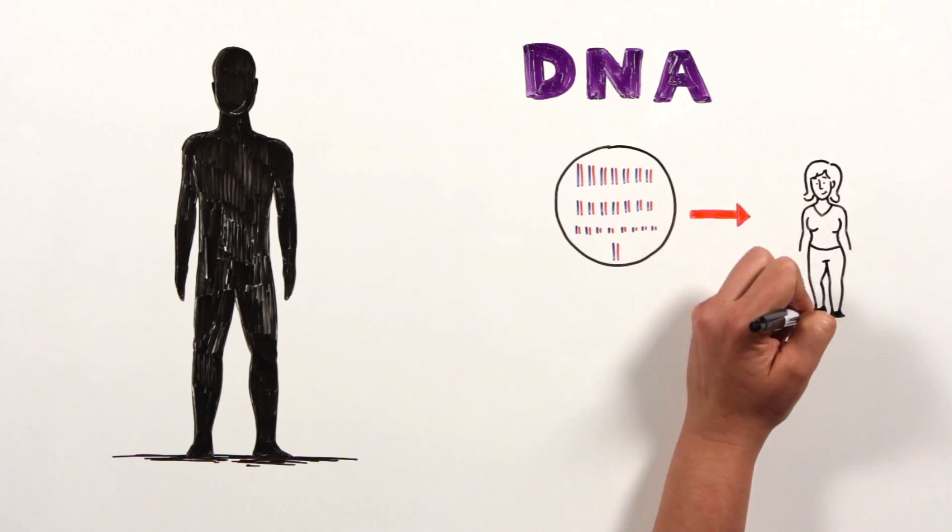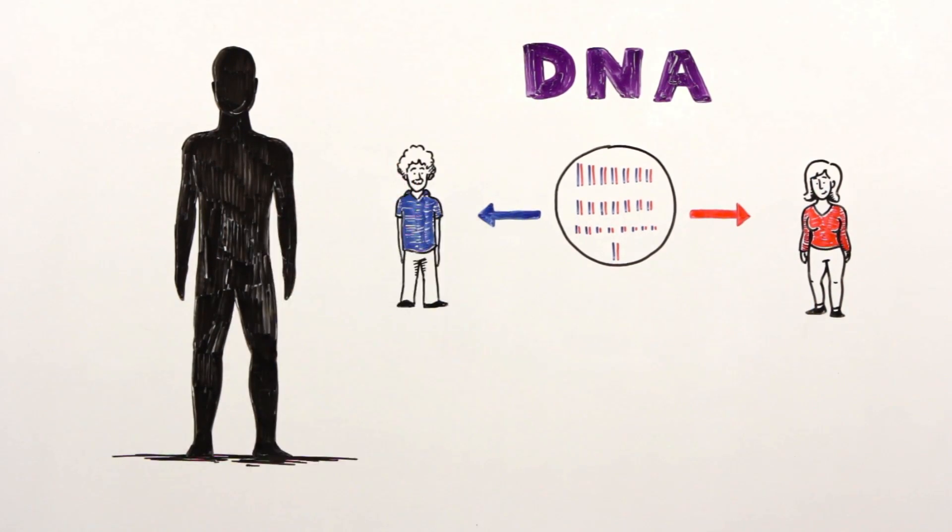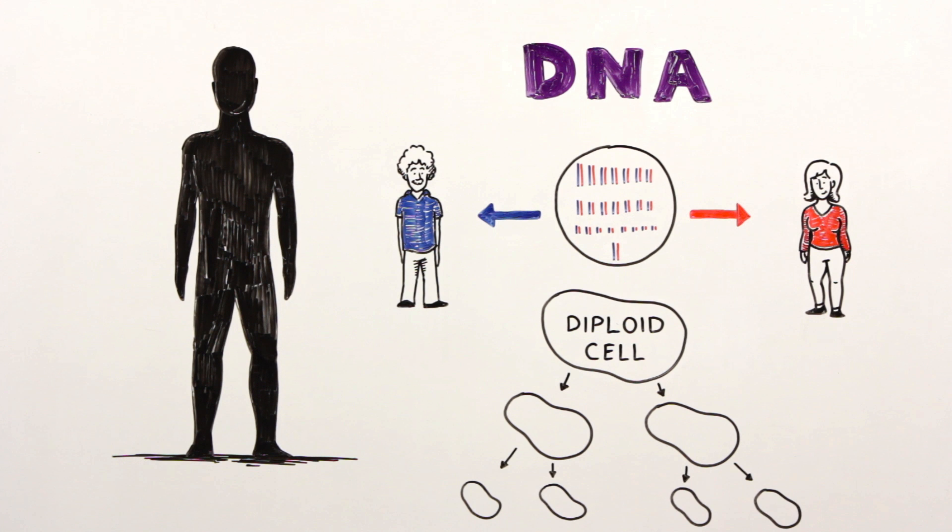One set of 23 chromosomes is inherited from the mother, and the other set is inherited from the father. Together, cells with two sets of chromosomes are called diploid cells, and they can divide to generate more diploid cells.